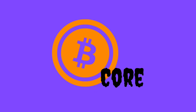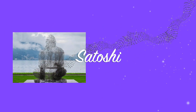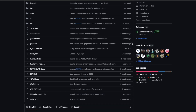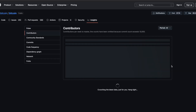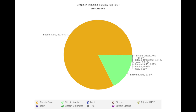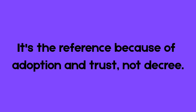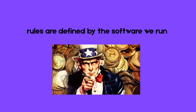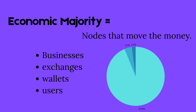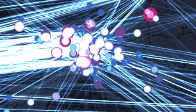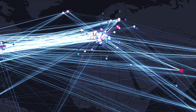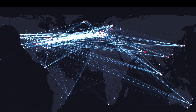The first and most common implementation is Bitcoin Core. It evolved from Satoshi's original software and has by far the largest development base — it's stable, reliable, and most of the network runs on it. Core is considered the reference today because it's what the vast majority of the network runs. The rules of Bitcoin are defined by the software we choose to run. If enough of the economic majority moved to a different client, that would become the new reference. The power isn't locked inside Core's codebase — it ultimately comes from users running their own nodes.